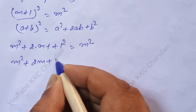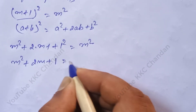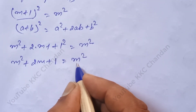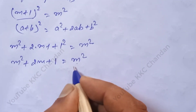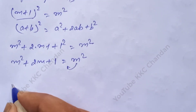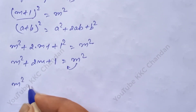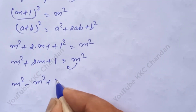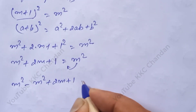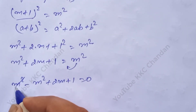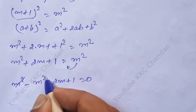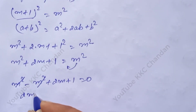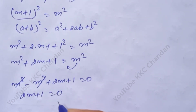After the next step, m square comes to this side. So: m square minus m square plus 2m plus 1 is equal to 0. m square minus m square cancels out, leaving 2m plus 1 is equal to 0.